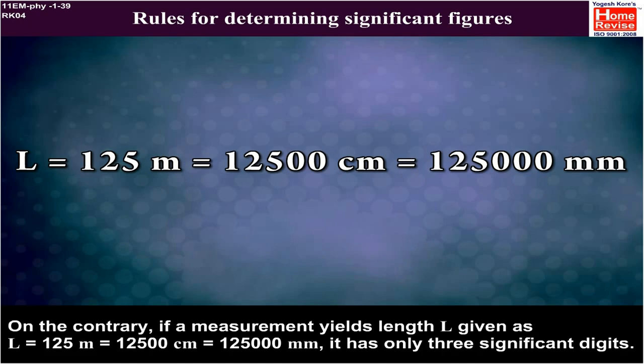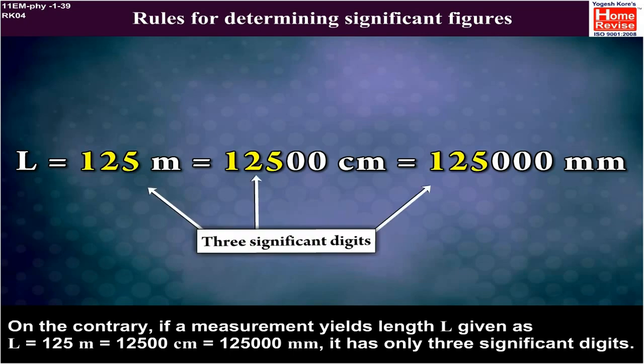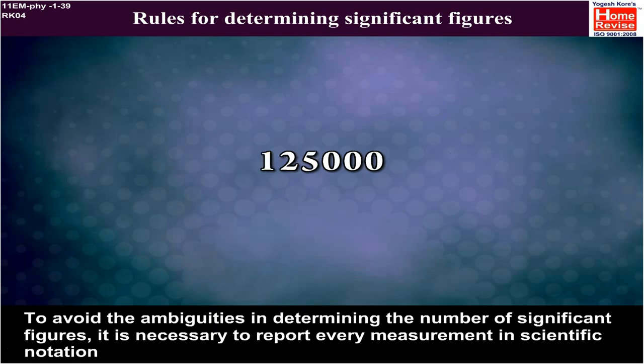On the contrary, if a measurement yields length L given as L = 125 m = 12,500 cm = 1,25,000 mm, it has only three significant digits.